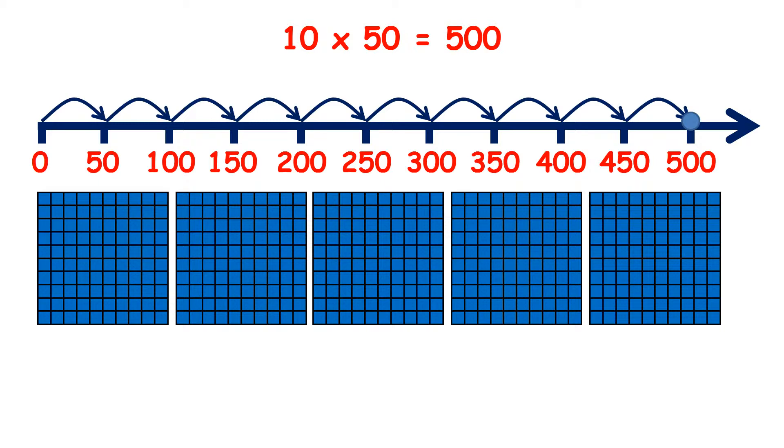10 times 50 is 500. So, if we have 10 lots of 50, we have 5 lots of 100. So, we have 500.